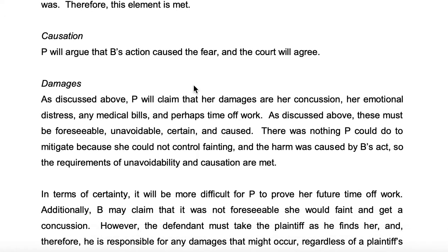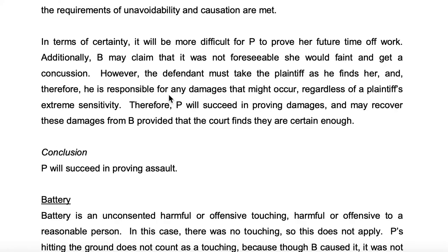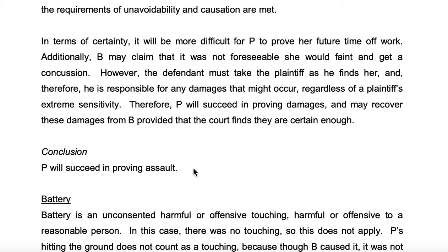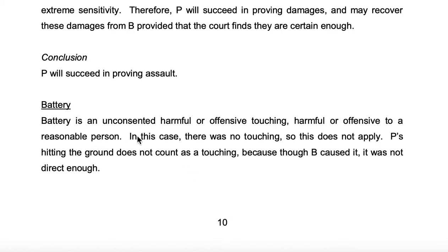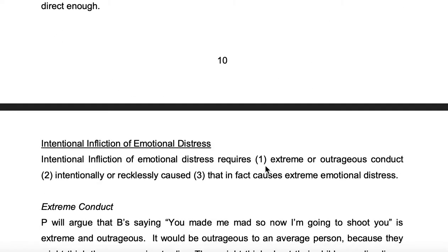I'm just going through it slowly and also commenting. Damages, as discussed above — P will claim her damages are the concussion, distress. Conclusion: P will succeed in proving assault. And then battery: battery is an unconsented harmful or offensive touching, harmful or offensive to the reasonable person.